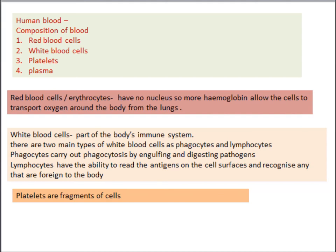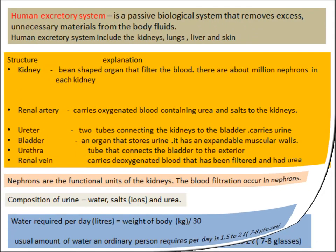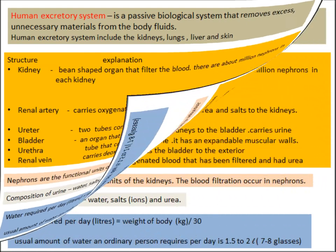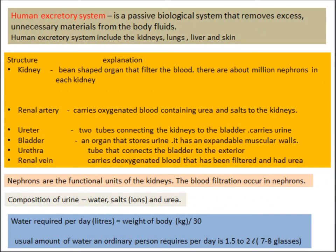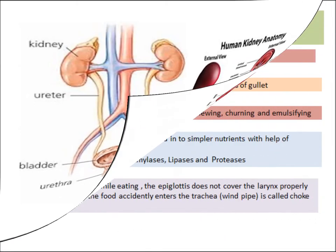Now let's turn to the human excretory system. The removal of by-products from the body that are produced during metabolism is known as excretion. Urea, salts, carbon dioxide, and water are the main excretory materials of organisms. The excretory system includes the kidneys, lungs, liver, and skin. The urinary system's main organs are the bean-shaped kidneys, along with the renal artery, renal vein, ureters, bladder, and urethra.